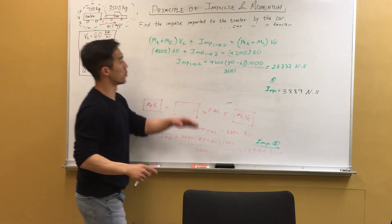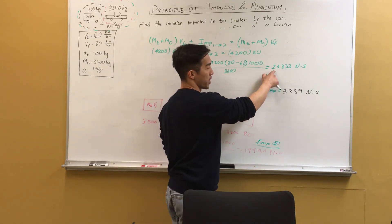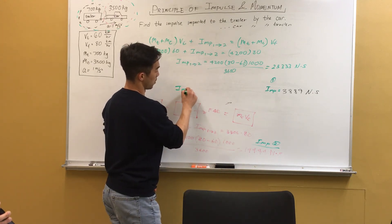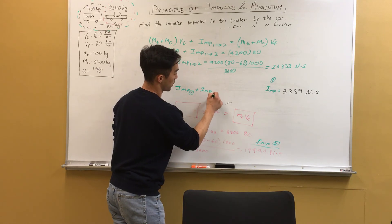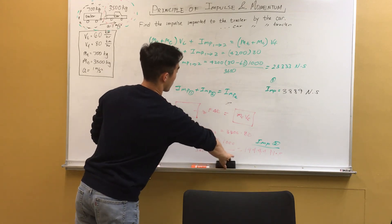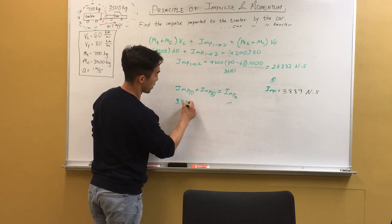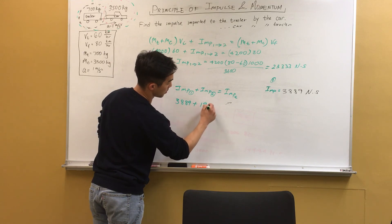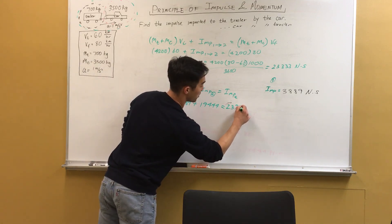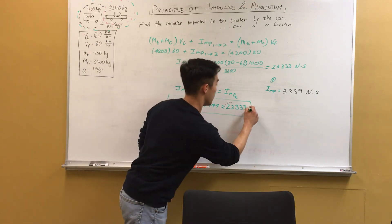And as I mentioned before, if we sum up the impulse for the trailer by itself and the car by itself, it should equal if we had analyzed the entire system. So if we sum up the impulse from case one and the impulse from case two, we should get the total impulse. So that was 3,889 plus 19,444, and that equals 23,333 newton seconds.